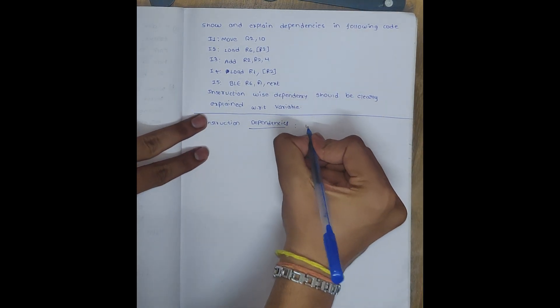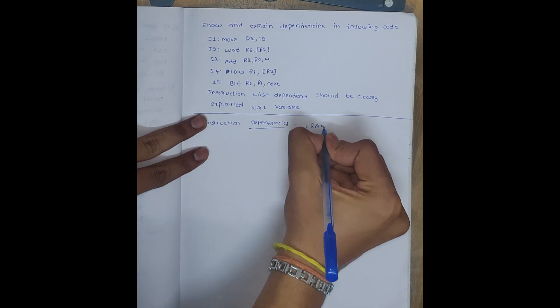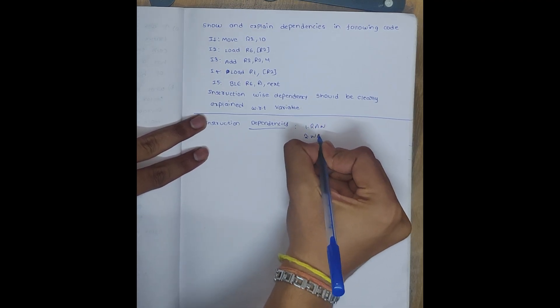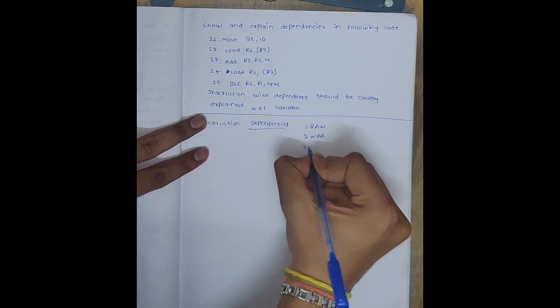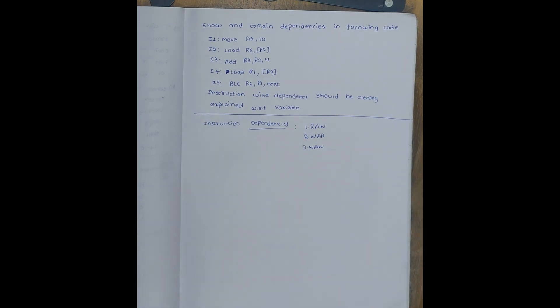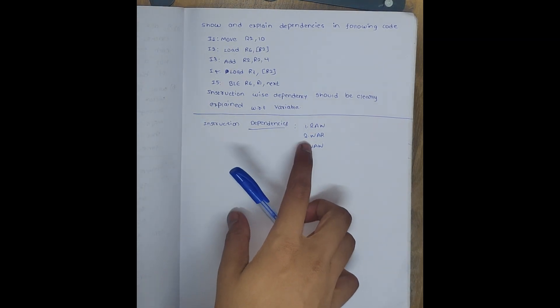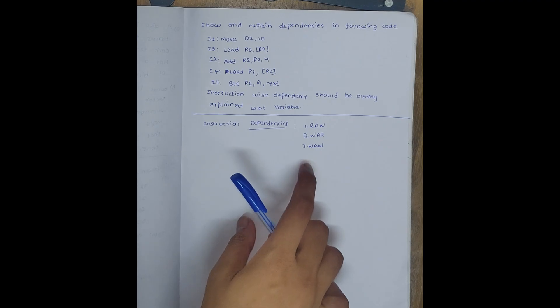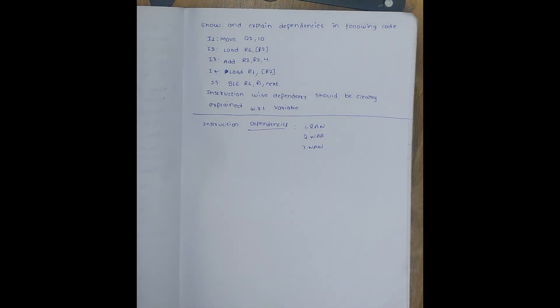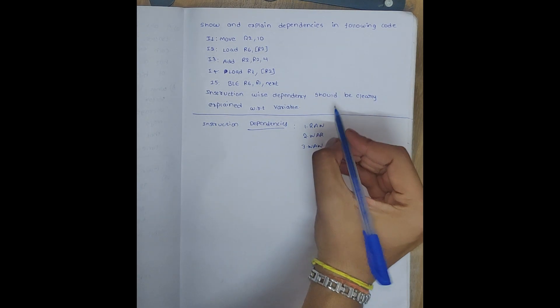There are three types. What are they? RAW, WAR, and WAW. RAW means read after write, and WAW means write after write. This is a true dependency - it is the most common.